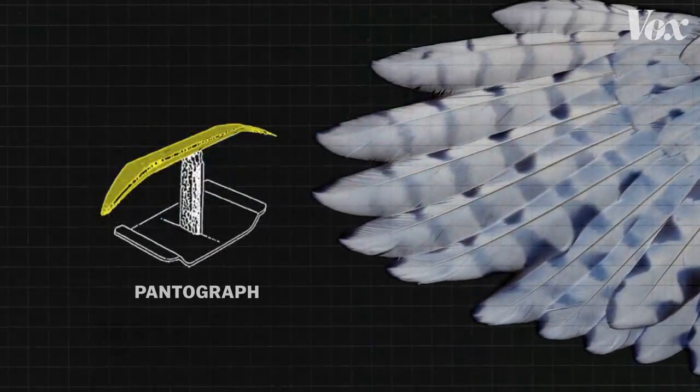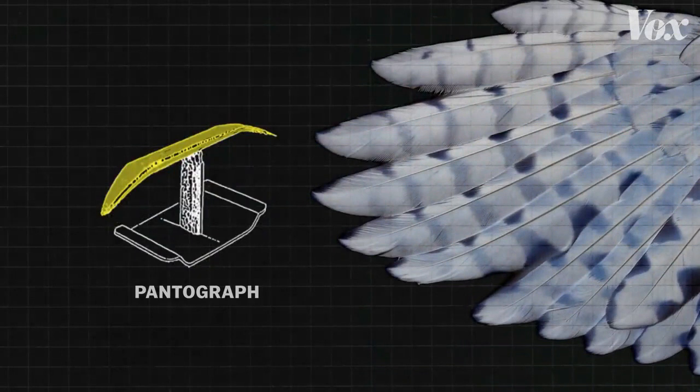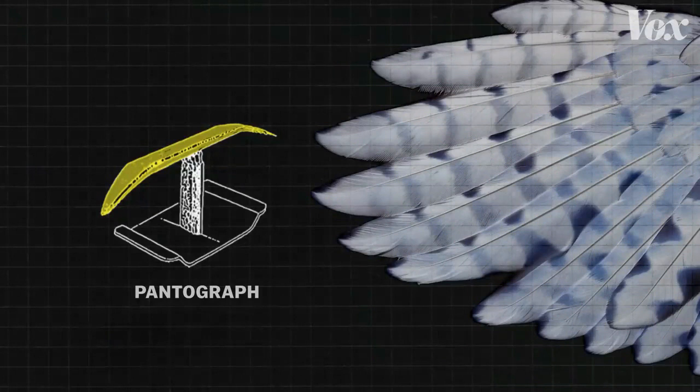Nakatsu modeled the redesign after their feathers, reducing noise by using the same serrations and curvature that allow them to silently swoop down to catch prey.